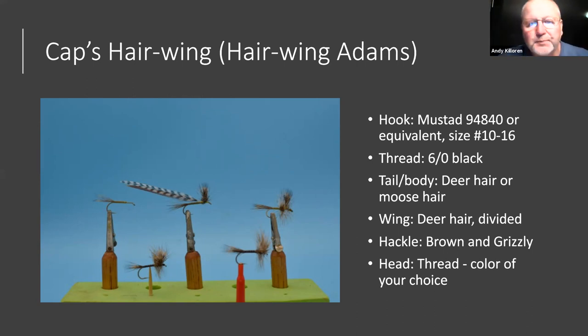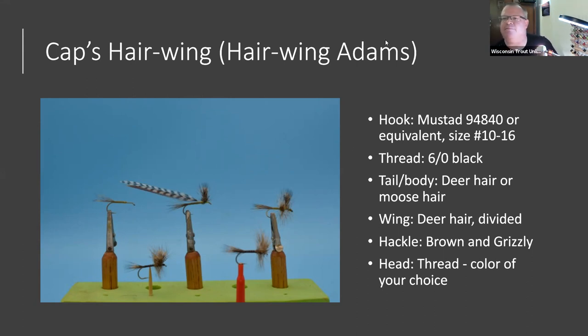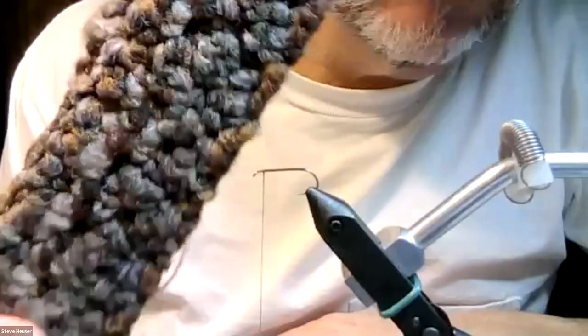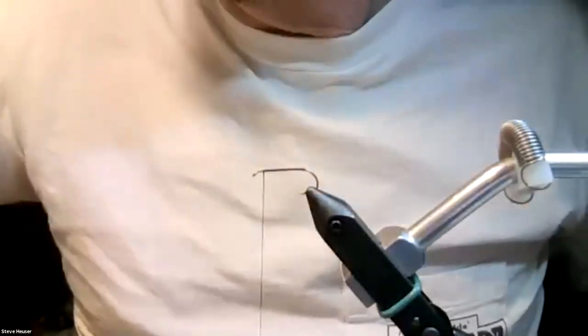Now Jason asks Steve to demonstrate how to tie a Cap's Hair Wing live. Andy stops sharing his screen so Steve can share. Use bleached deer hair on a size 14 or 16 — it's an awesome fly for the Ephoron hatch. If you have friends in the right places you'll have a piece of carpeting from George's — Jason's lucky enough to have one. And here's a cassette tape of Wayne Anderson and Gary LaFontaine talking about the Wolf River.